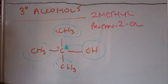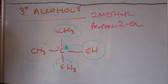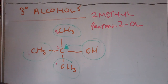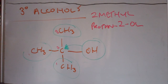That covers primary, secondary, and tertiary alcohols and how you classify them. Primary alcohols are when the hydroxyl group is bonded to a carbon atom that is bonded to one or zero alkyl groups. Secondary alcohols are when the hydroxyl group is bonded to a carbon that is bonded to two alkyl groups. And tertiary alcohols are when the hydroxyl group is bonded to a carbon that is bonded to three alkyl groups.